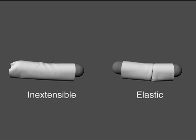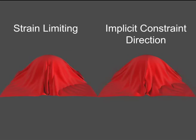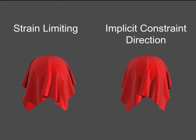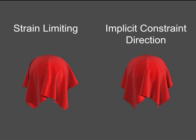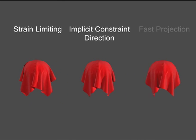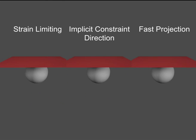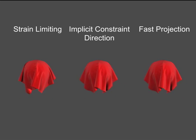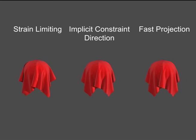We introduce an implicit integration of the constrained Lagrangian equation that gives comparable visual quality. We call this the implicit constraint direction method. We make a first order approximation of the implicit constraint direction that gives us what we call the fast projection method.